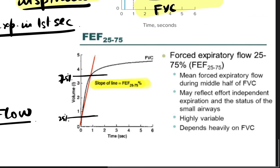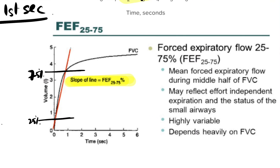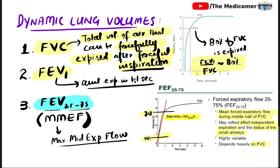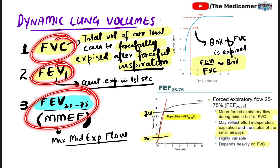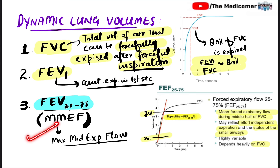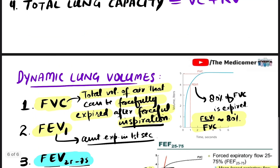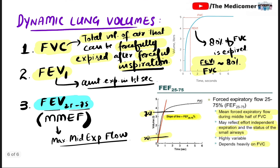This measurement has clinical significance. It reflects the mean forced expiratory flow during the mid half of FVC — from 25 to 75 percent. It reflects effort-independent expiration and the state of small airways, telling us about various pathologies. Its results can be variable and depend on FVC. So these were the dynamic lung volumes: FVC, FEV1, and FEV25 to 75 percent, also called maximum mid expiratory flow rate. We'll discuss other aspects of pulmonary function tests in the second video.